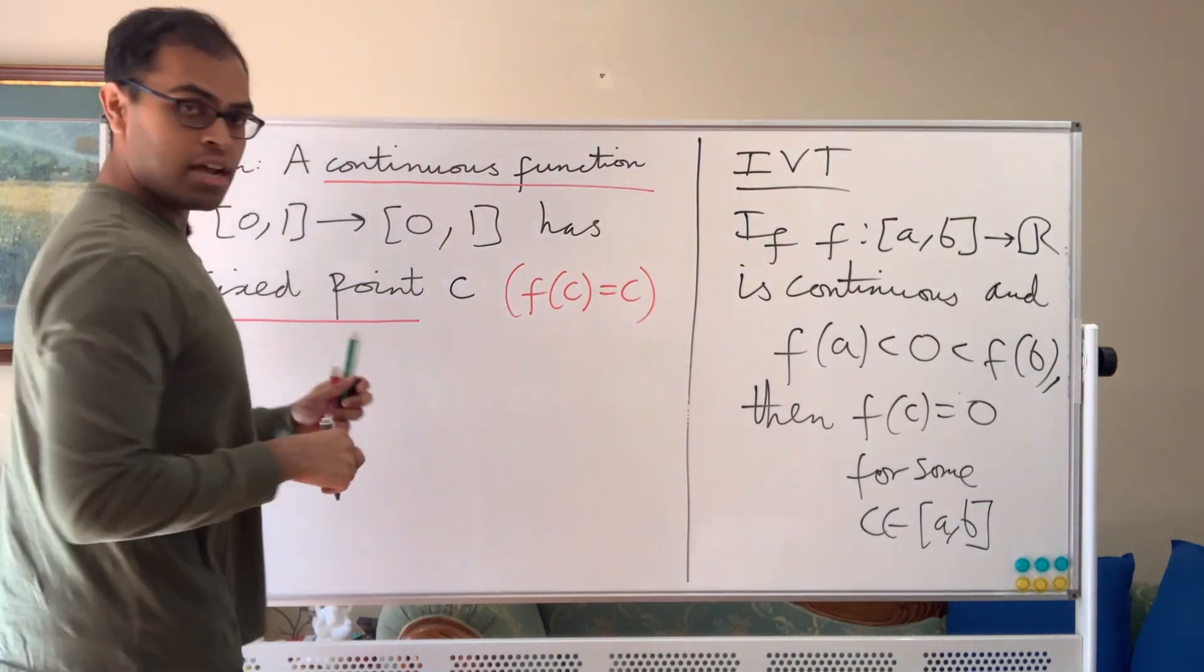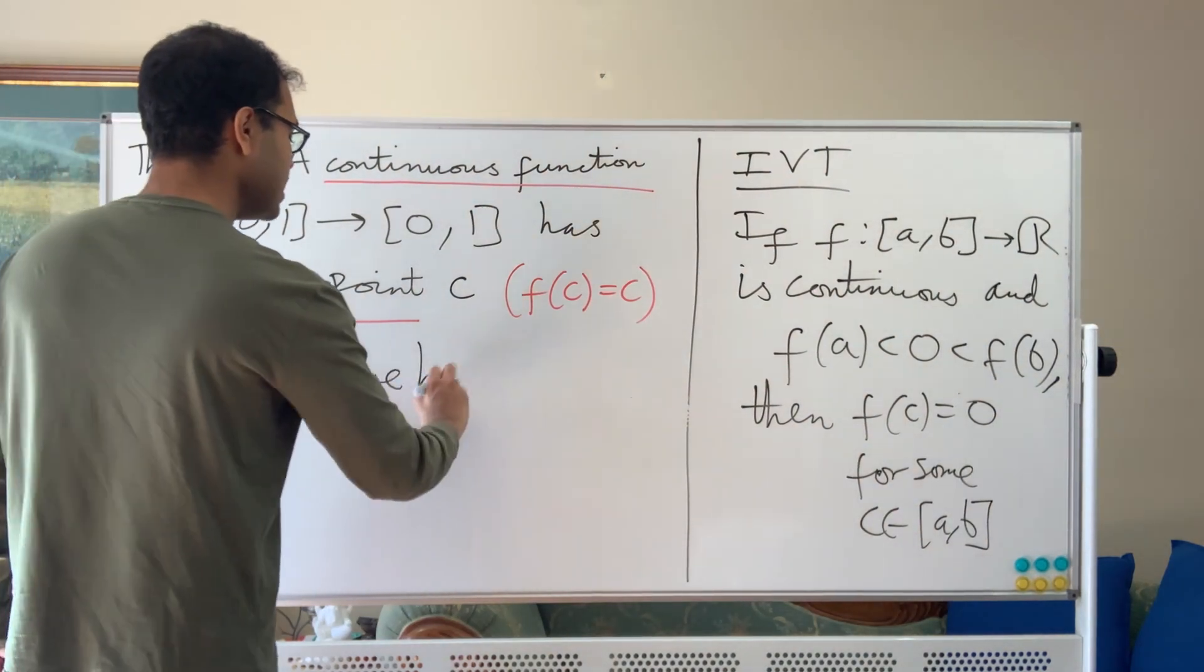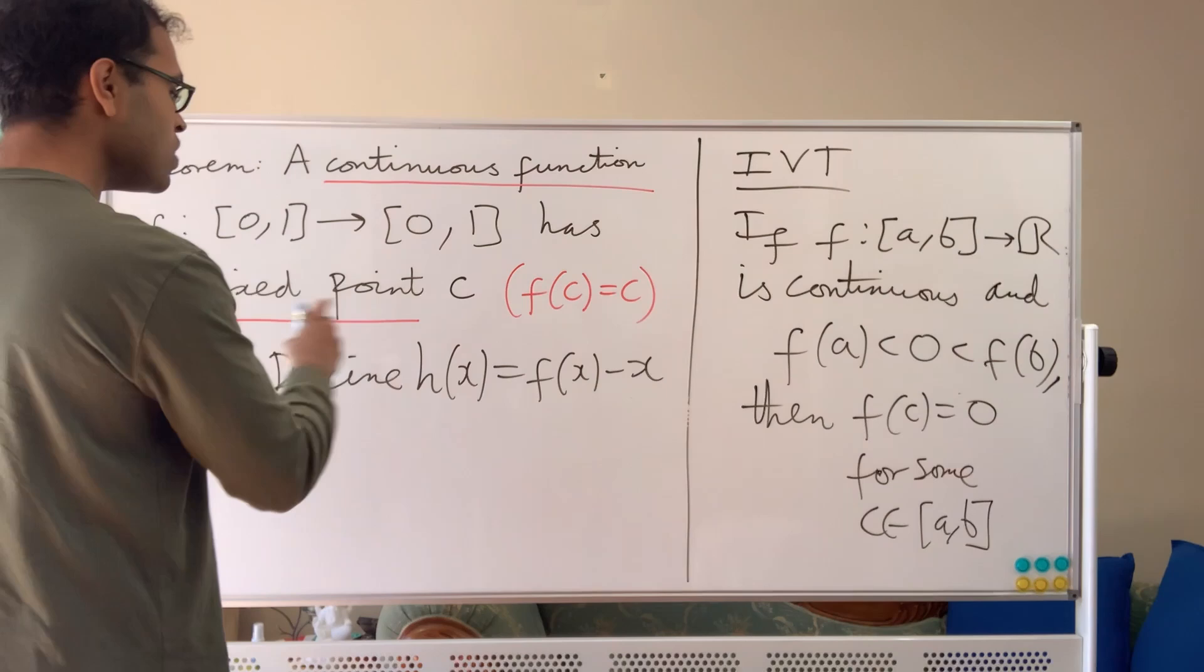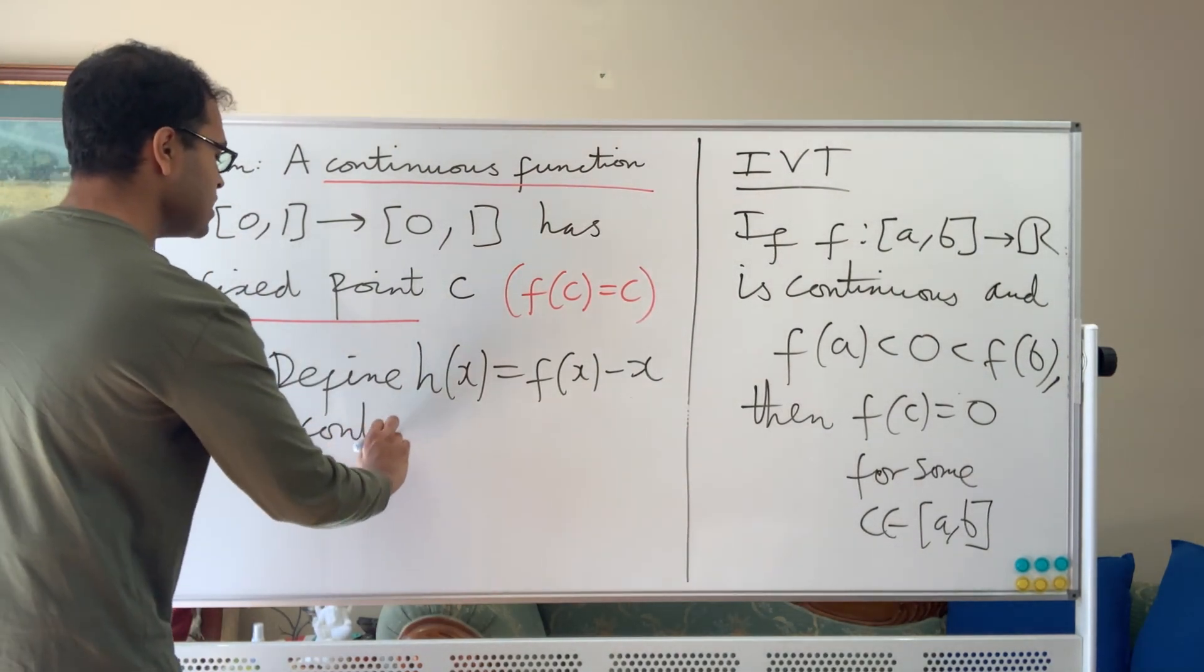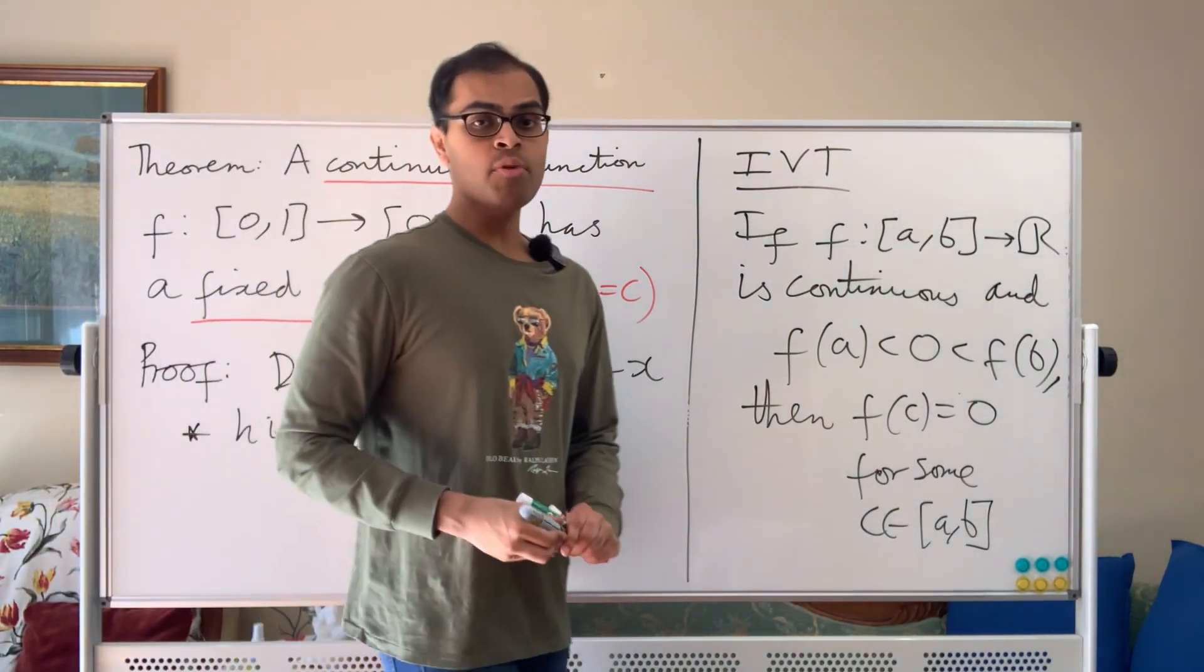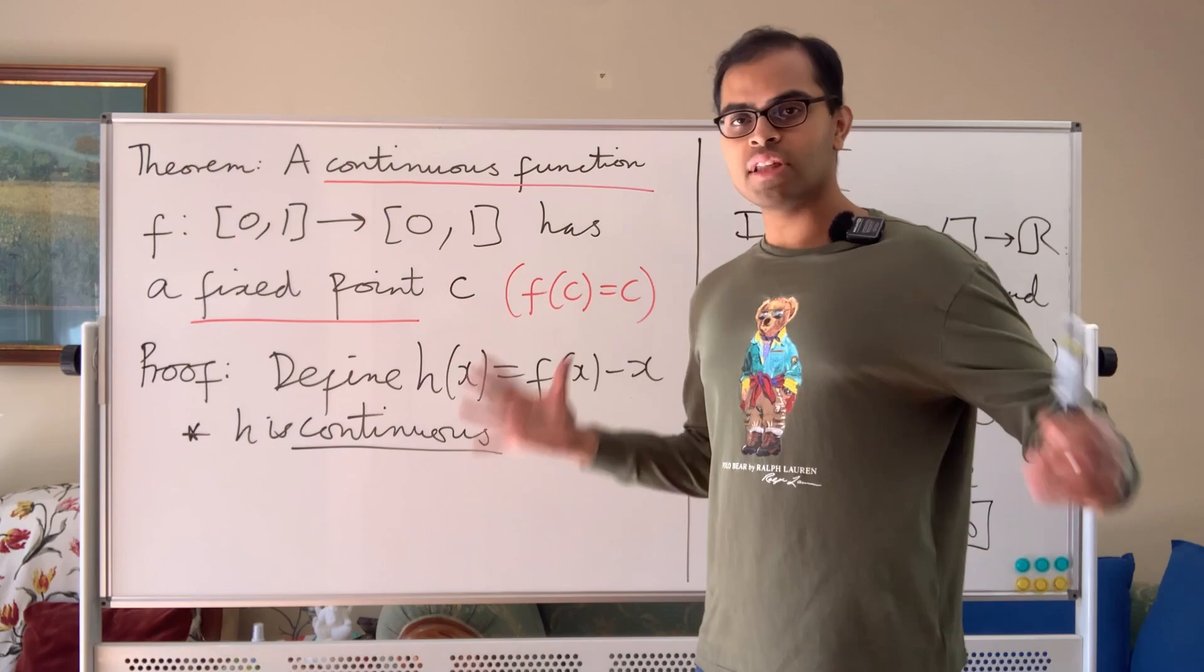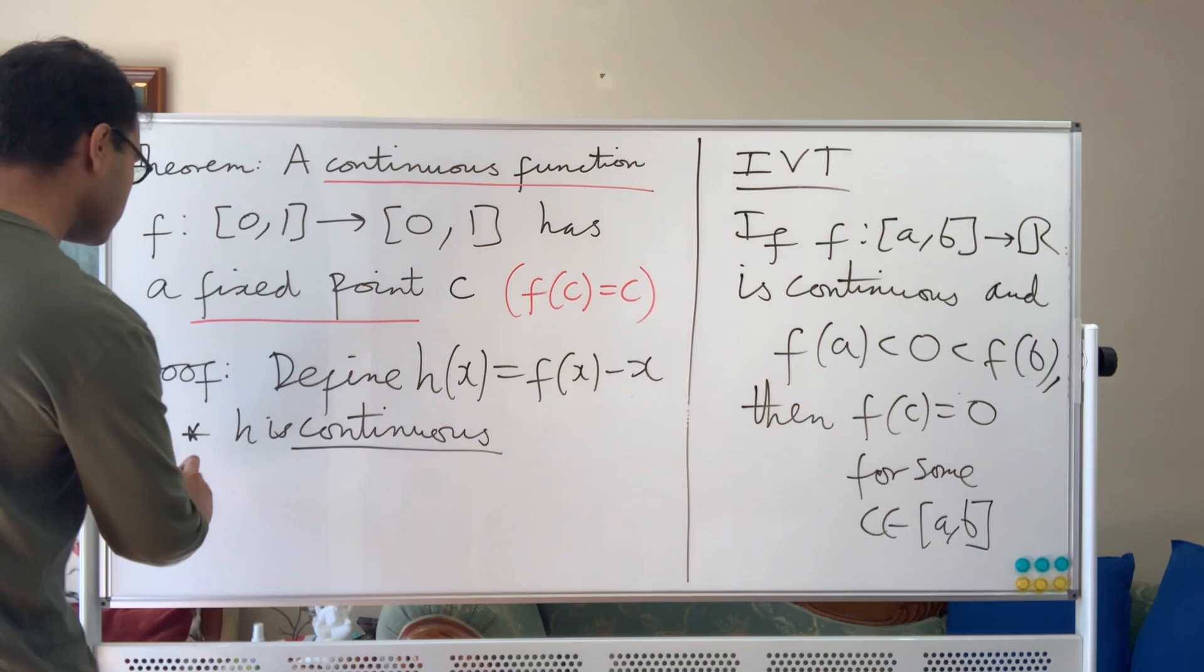I'm going to prove this theorem, the Brouwer Fixed Point Theorem. Define a function h(x) equals x minus f(x). We're taking the difference, we want to find a solution to h(x) equals 0. Notice that h is continuous. You want to be very precise here to train yourself to think rigorously. Math is about intuition and ideas, but the rigor is necessary to set things up. It's like a foundation. You can't build a house without laying out the foundations. h is continuous because it's a difference of two continuous functions.